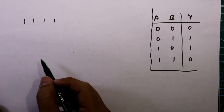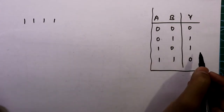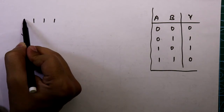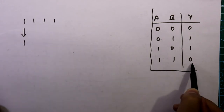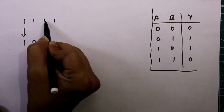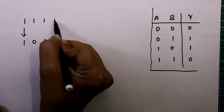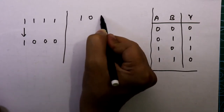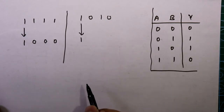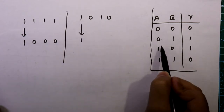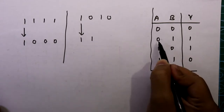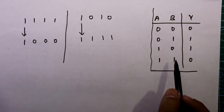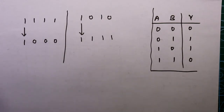Let's take another example with binary 1111. Write the MSB as it is. Then 1 XOR 1 equals 0, again 1 XOR 1 equals 0, and again equals 0. Another example: 1010 — write MSB as it is, 1 XOR 0 is 1, 0 XOR 1 is 1, 1 XOR 0 is 1. From these examples we confirm that the XOR function is applied to convert binary to gray code.